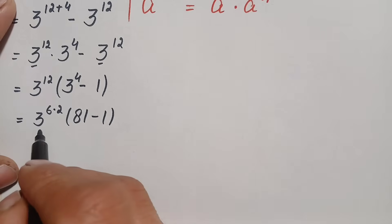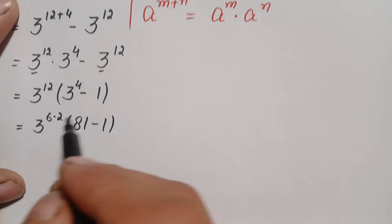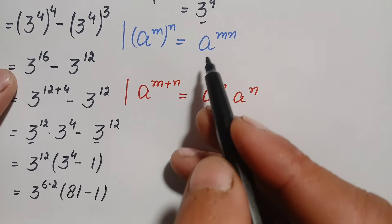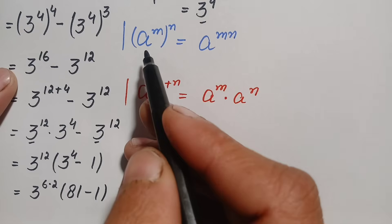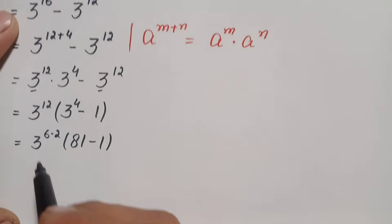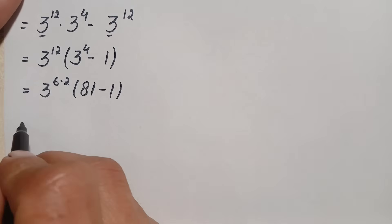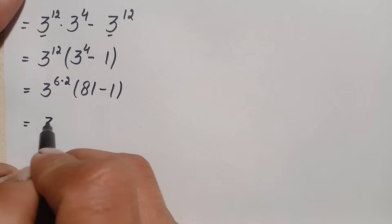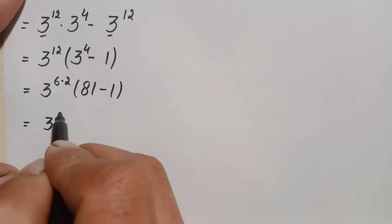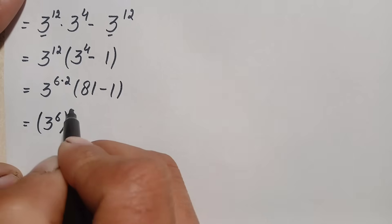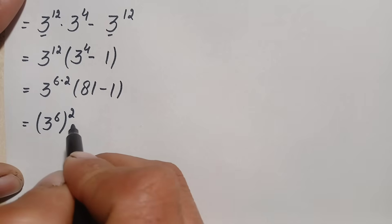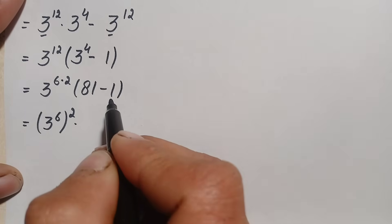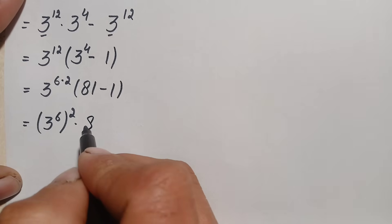Now we will use an exponential identity to change 3 to the power 12 into a squared form. So this becomes 3 to the power 6, whole square, times 80.